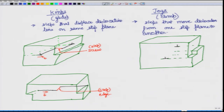There is an edge dislocation which is moving like this, but there is a discontinuity and hence there is a step involved. For this step, what is the Burgers vector? Remember always that the Burgers vector will not change for a dislocation whether we are talking about steps or a continuous loop of a dislocation. So the Burgers vector for the dislocation would also describe the Burgers vector of the step. Here the Burgers vector is like this and the line vector is like this, therefore the character should be edge.